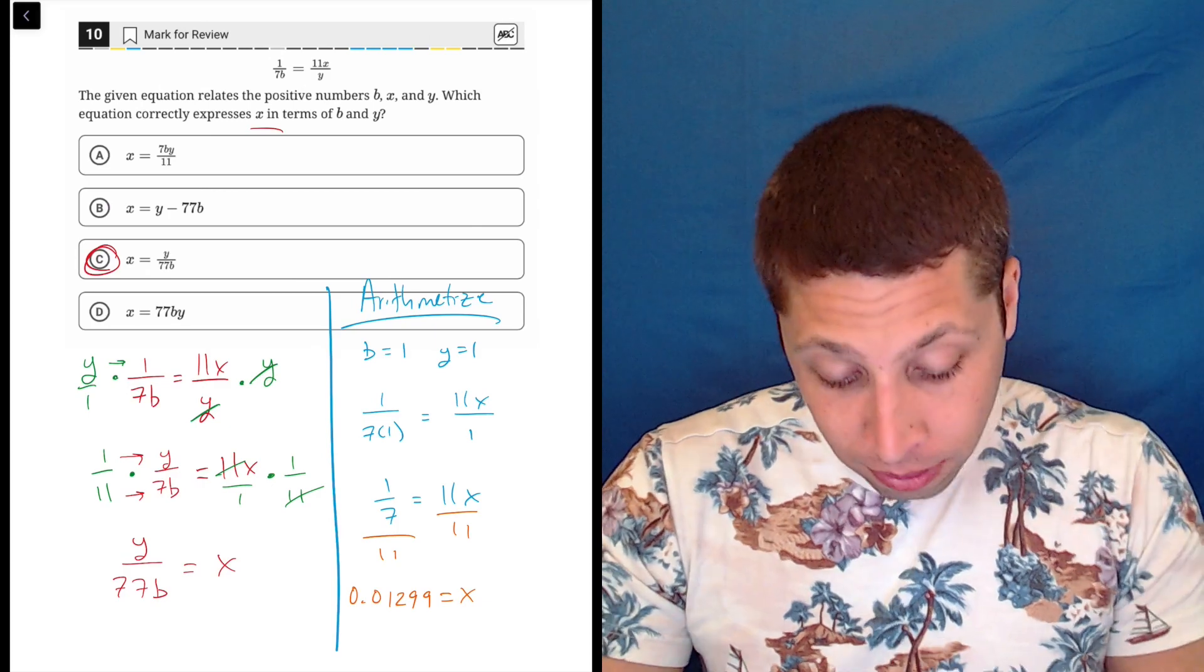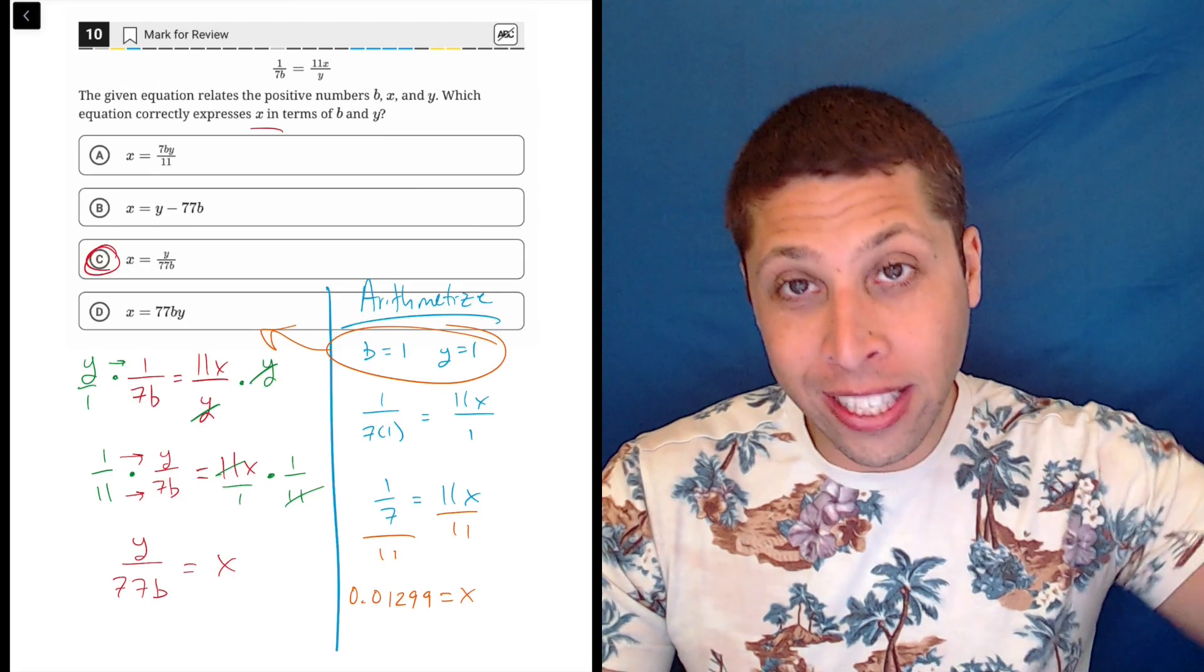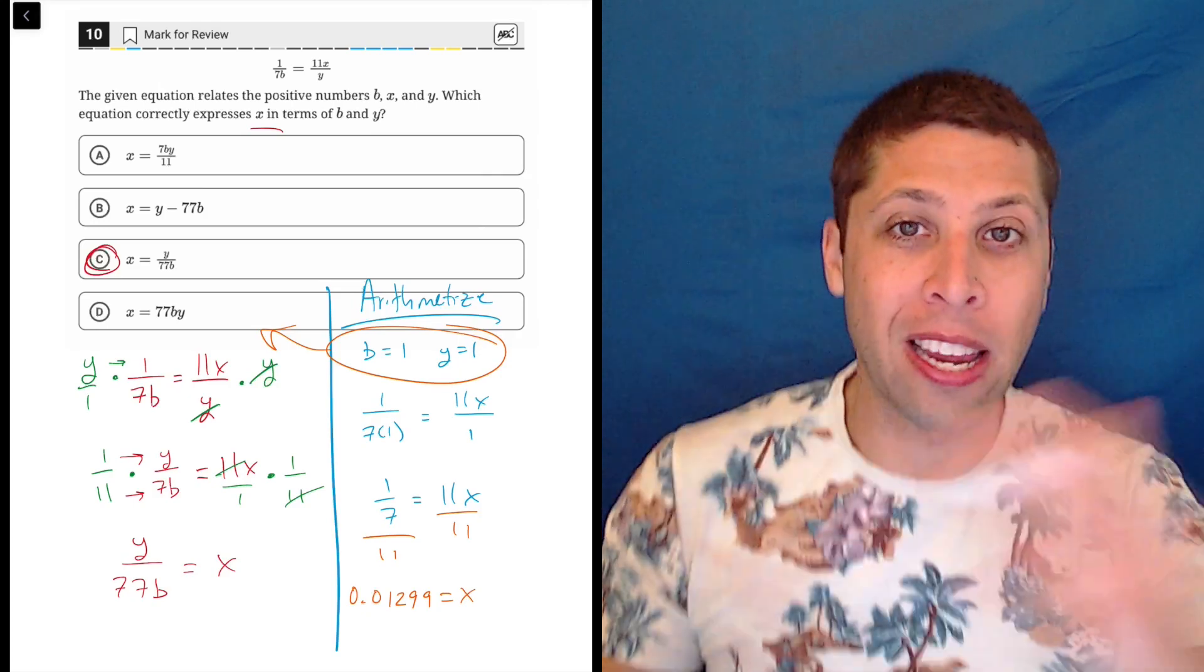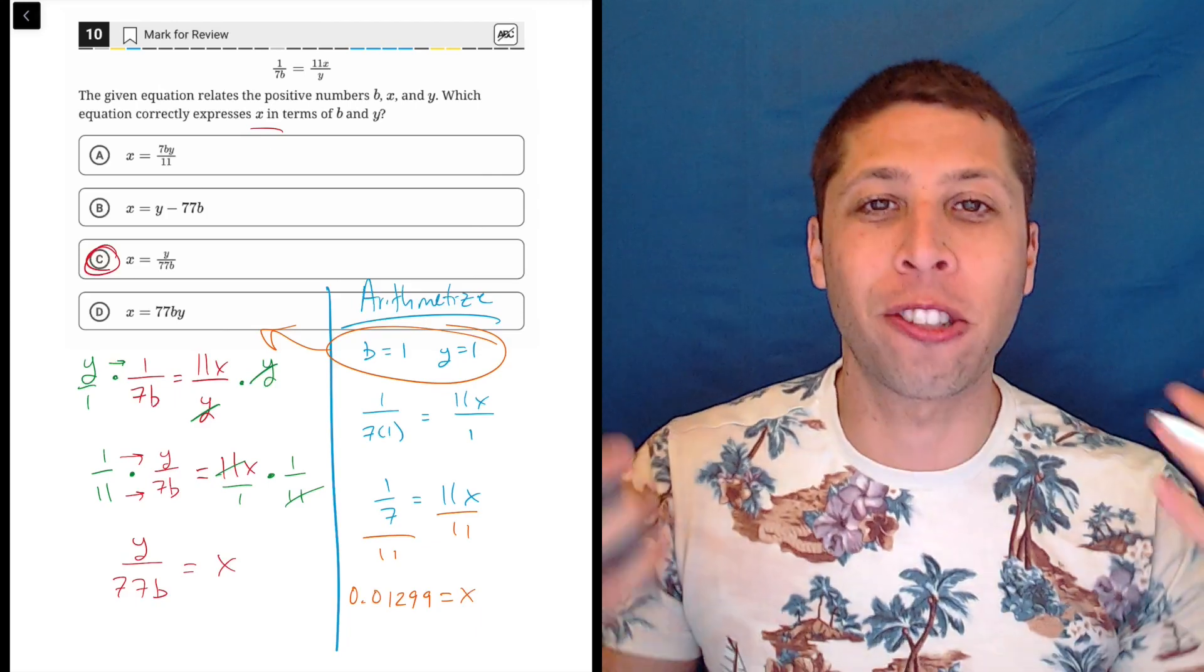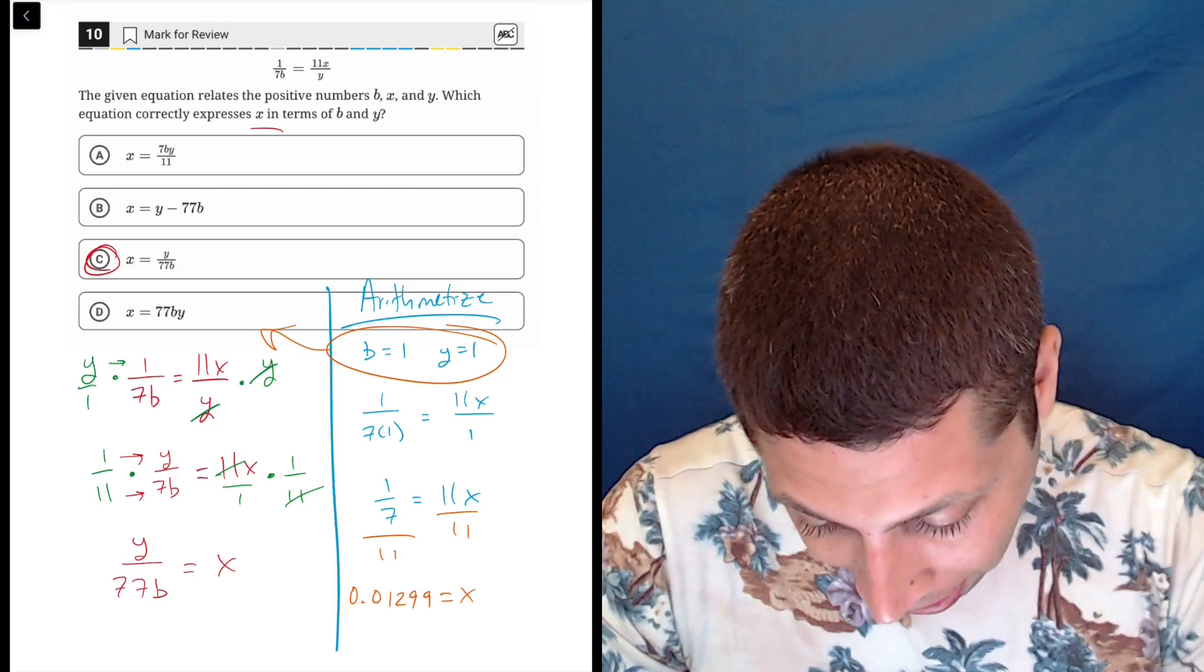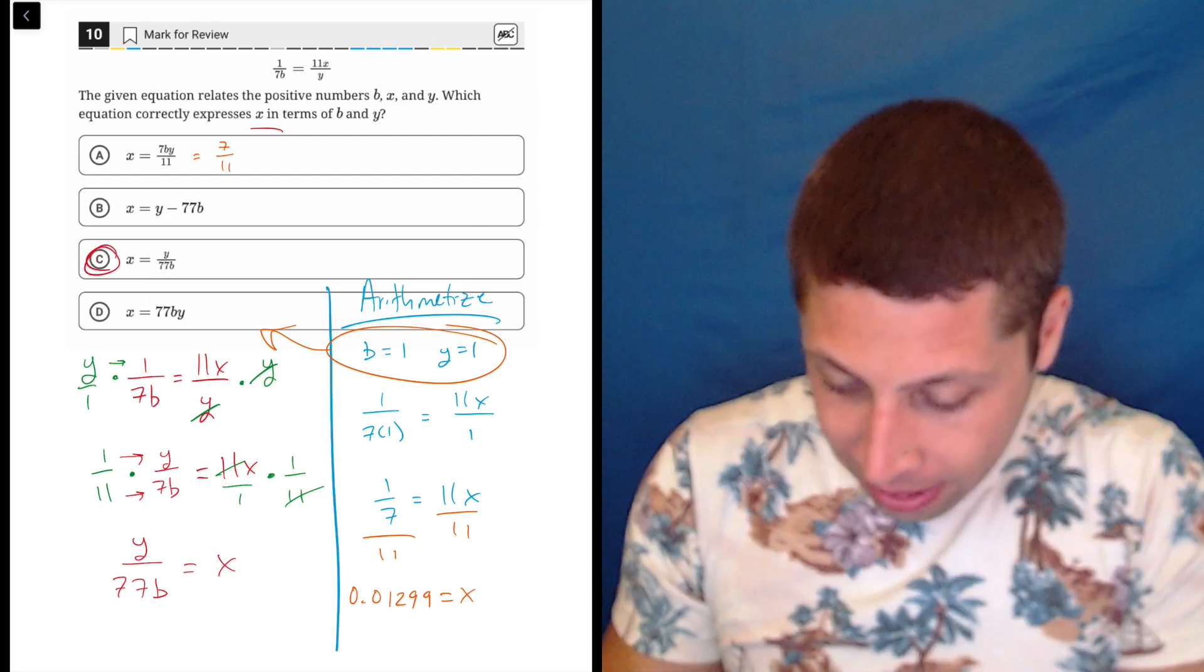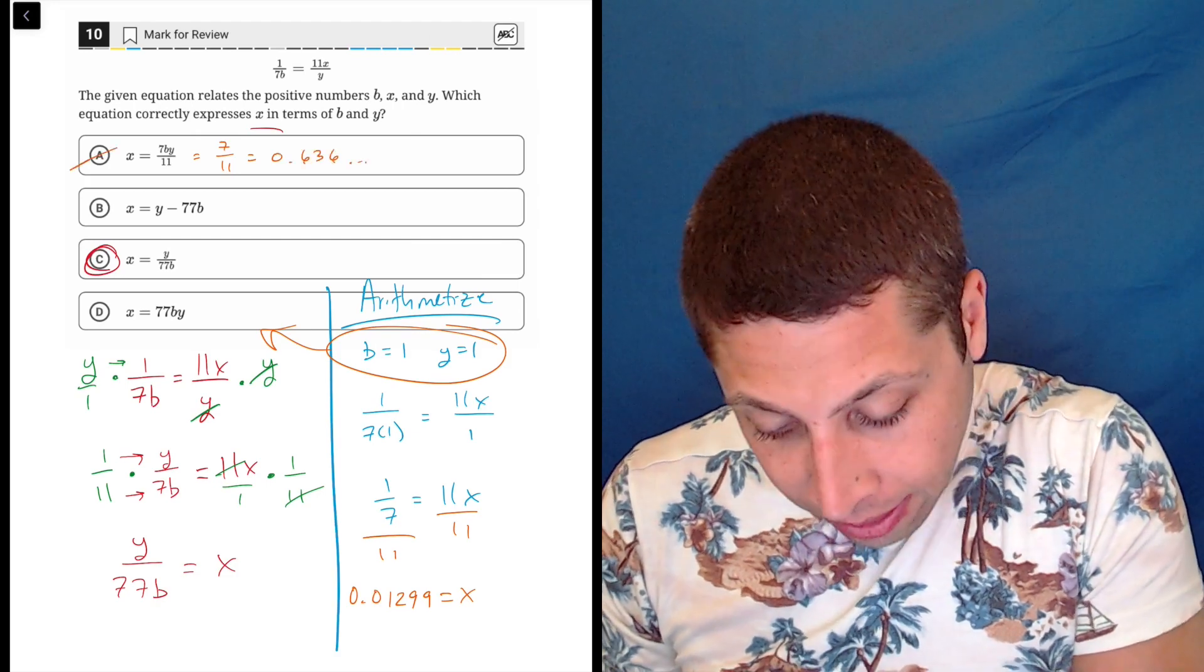Now what good does that do? Well, if I put one for B and Y into all these answer choices, I should get X also equal to 0.01299, because that's how this should work. The same numbers should work in the original expression and the final expressions, because they're supposed to be the same expression. They're just rearranged. So let's try choice A. I think this might be a problem. Let's see, seven times one times one is seven over 11. Seven times 11, or seven divided by 11, nope, is 0.636, so no.